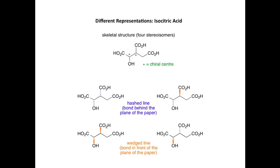Here are the four different stereoisomers. We can represent the arrangement or configuration of substituents around each of those chiral carbon atoms using hashed lines and wedge lines. In this particular stereoisomer, the bond from the carbon to the carboxylic acid group is pointing away from us, as is the bond between the carbon and the oxygen. In this stereoisomer, both the bond to the carboxylic acid and the bond to the OH group are shown pointing towards us — in front of the plane of the paper. In the other two stereoisomers, the bond to the carboxylic acid points towards us with the OH away, and finally the reverse situation. So when you have chiral carbon atoms, you use hashed and wedge line notation to show the stereochemistry of those chiral centers.